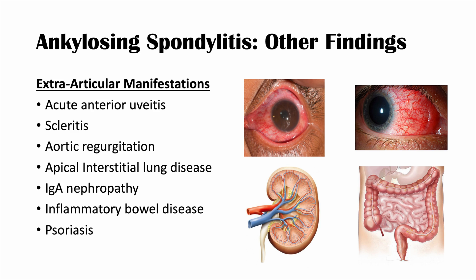Ankylosing spondylitis not only affects the spine and peripheral joints, but it can affect many other parts of the body due to its systemic inflammatory actions, including the eyes, the aorta of the heart, the lungs, the kidneys, the gastrointestinal system, and the skin in the form of psoriasis.